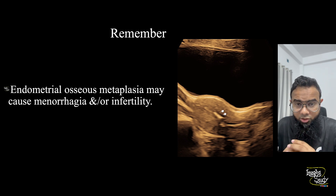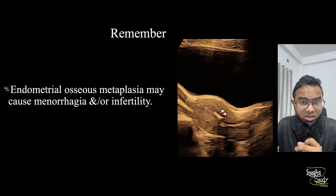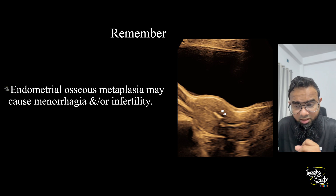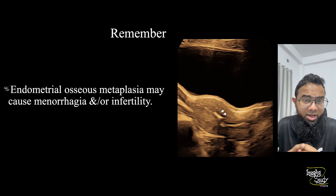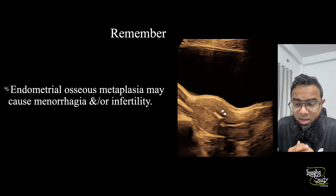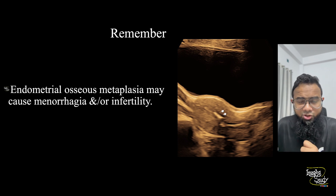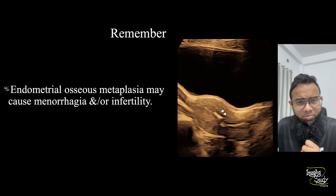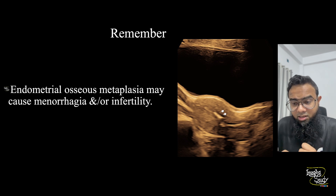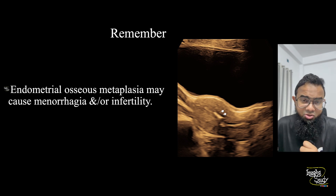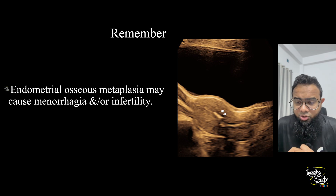The take-home message: endometrial osseous metaplasia may cause menorrhagia and/or infertility. If the patient wants to conceive, you need to remove these calcific foci — either by hysteroscopy or another appropriate method. This patient is 43 years old, has no menstrual complaints, and has no desire for further pregnancy, so no further intervention is planned.